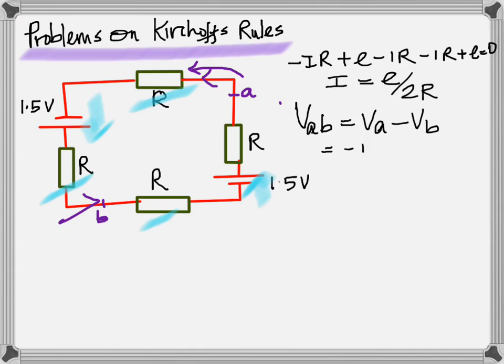From the algebra that becomes I is equal to E over 2R. Now to find the potential drop between A and B, which is labeled as V_AB, it's going to be the potential at A minus the potential at B, which is minus IR plus E minus IR.